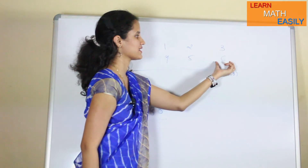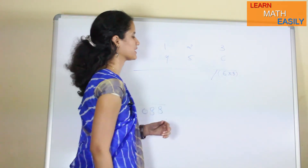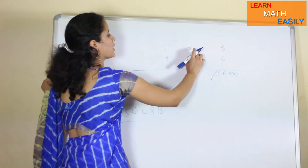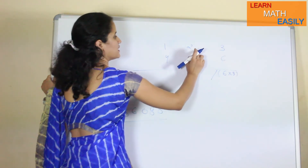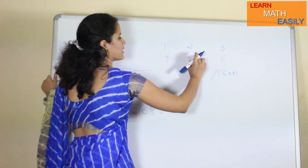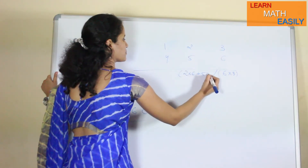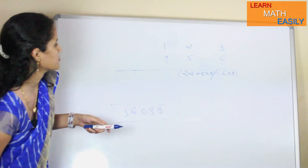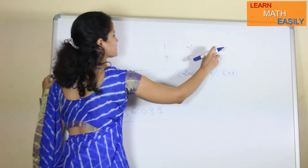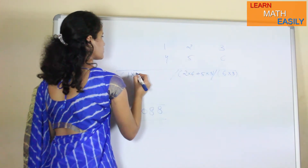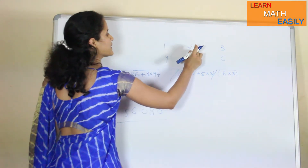In the first step, you did 3 multiplied by 6. In the second step, you cross-multiply these terms and then add: 2 multiplied by 6 plus 5 multiplied by 3. In the third step, you have to multiply the first column with the third column, but you cannot skip the middle terms. So you compute: 1 into 6 plus 3 into 4 plus 2 into 5.